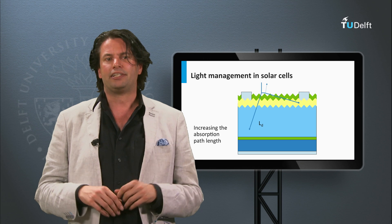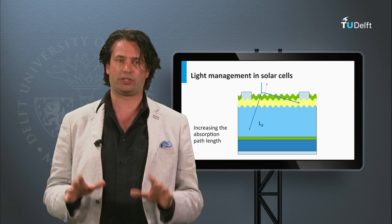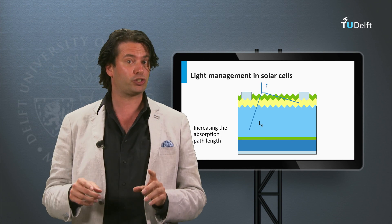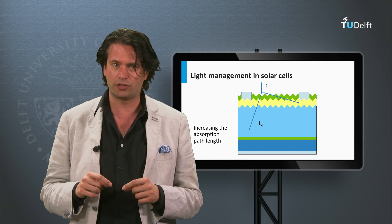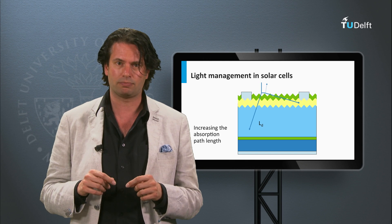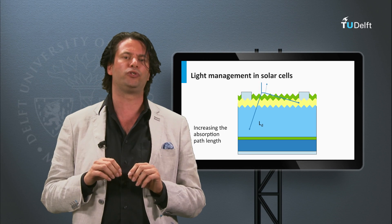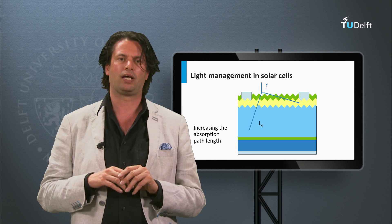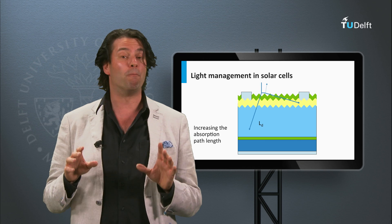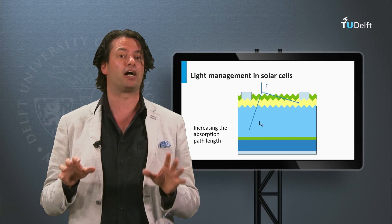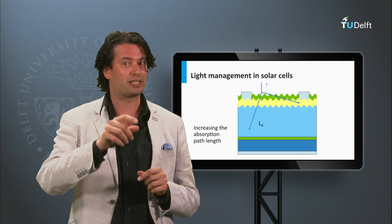Summarized, this week we have learned some important concepts. We have discussed how we determine the performance of a solar cell using the external parameters. In addition, we have discussed some important design rules for solar cells. Next week we shall discuss the most dominant PV technology in the market, crystalline silicon. See you next week!